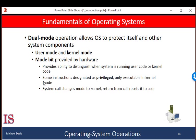The approach taken by most computer systems is to provide hardware that allows differentiation among various modes of execution. We need two separate modes of operation: user-mode and kernel-mode. Kernel-mode is also called supervisor-mode, system-mode, or privilege-mode. A bit called a mode-bit is added to the hardware of the computer to indicate the current mode — for example, kernel-mode might be zero and user-mode might be one. With the mode-bit, we can distinguish operating system code and user code.